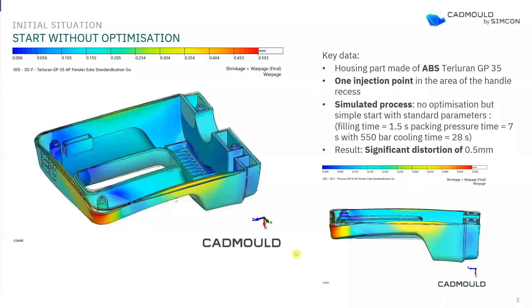Here you see the example. Whenever you start, you usually begin with a standard Cadmold calculation — in this case a simple calculation with standard process parameters, just a quick trial to find out how the part behaves. Here we see the warpage of the part: a significant distortion of about 0.5 millimeters in this area. We can see the part is bending a lot and the walls at the side move a little bit to the inside.